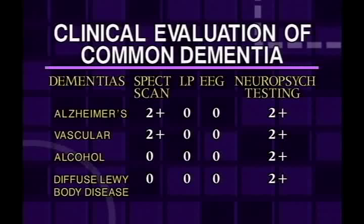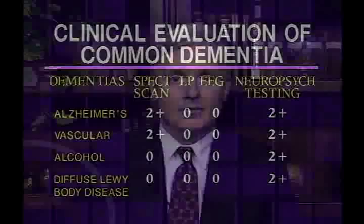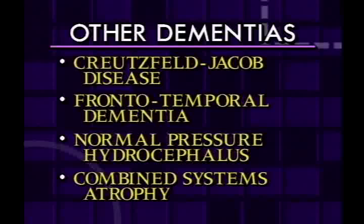Today we've focused on the common dementias such as Alzheimer's disease, vascular dementia, diffuse Lewy body disease, and alcohol-induced dementia. There are a variety of other dementias, such as Creutzfeldt disease (a prion-mediated disorder), frontotemporal dementia, normal pressure hydrocephalus, and combined system atrophy. In fact, there is a lengthy list of disorders causing cognitive impairment. If you know the basic clinical history and neurological and physical findings present in the four most common types, you will be able to diagnose and treat the vast majority of patients who come into your primary care office.